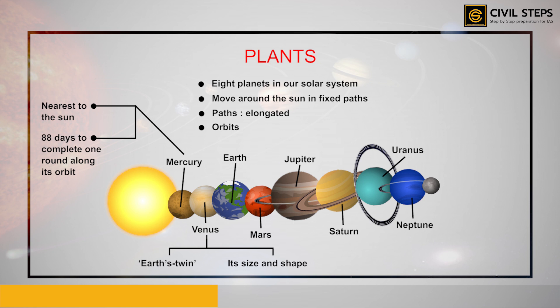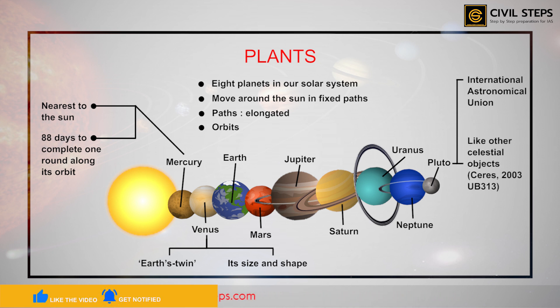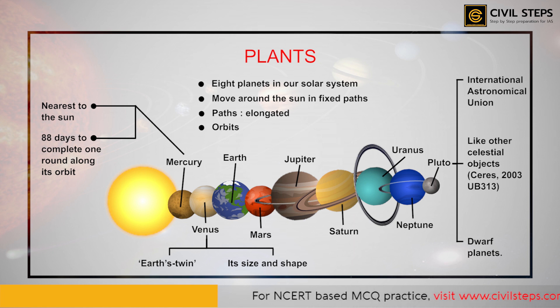In August 2006, Pluto was also previously considered to be a planet. In a meeting of the International Astronomical Union, a decision was taken that Pluto, like other celestial bodies discovered in the recent past, may be called a dwarf planet. Therefore, from being nine planets in the solar system, it turned out that there are only eight planets. Some of these planets even have their own moons.